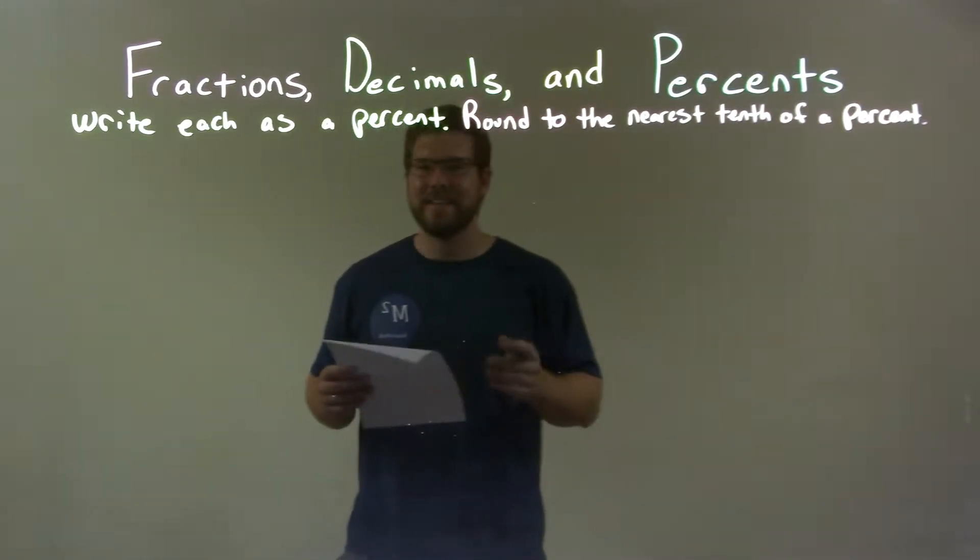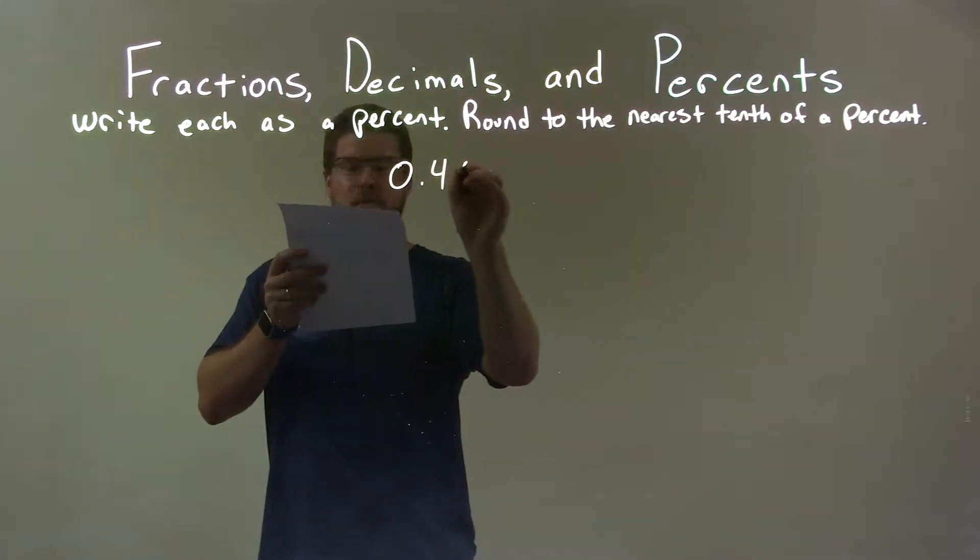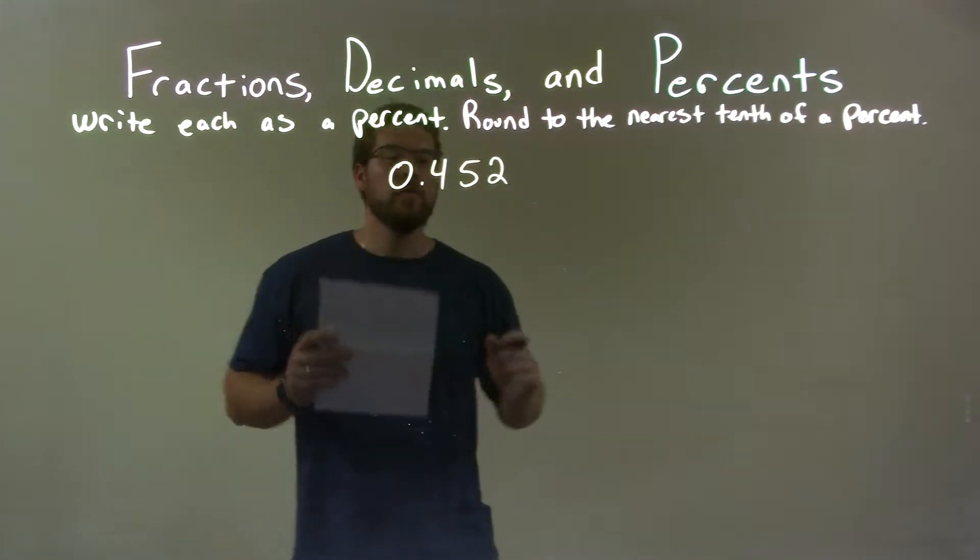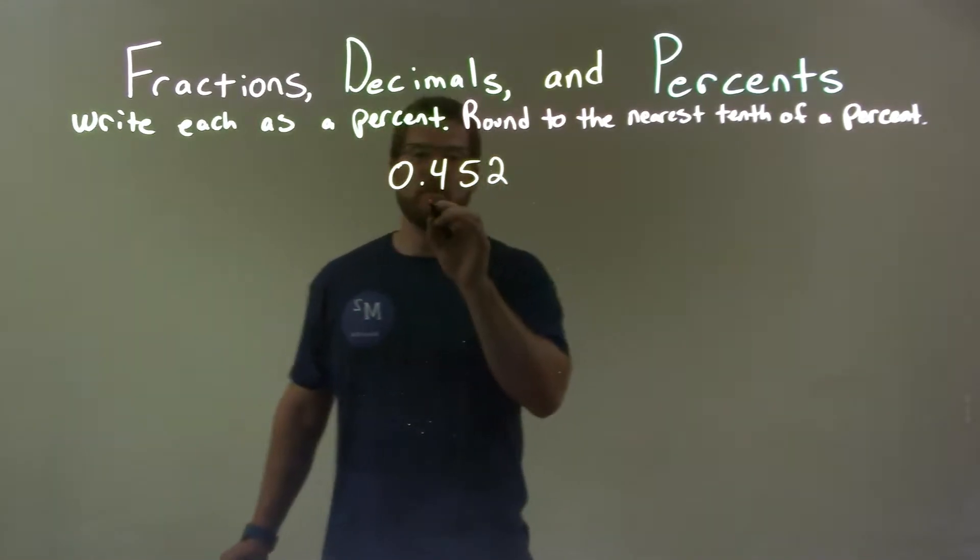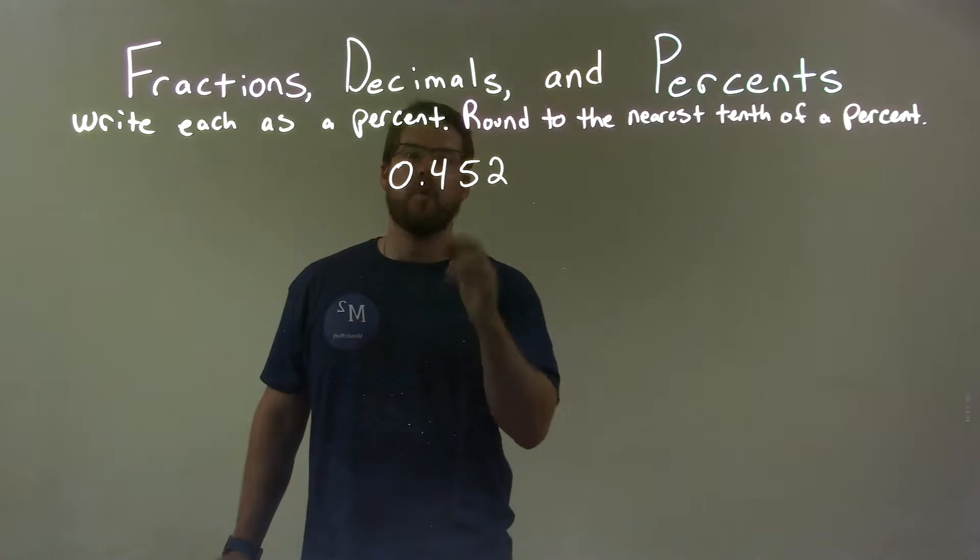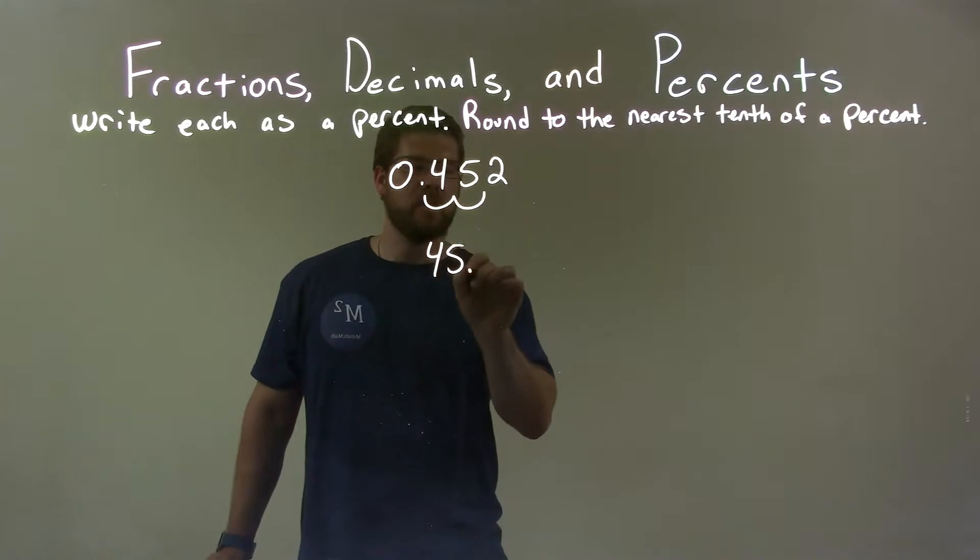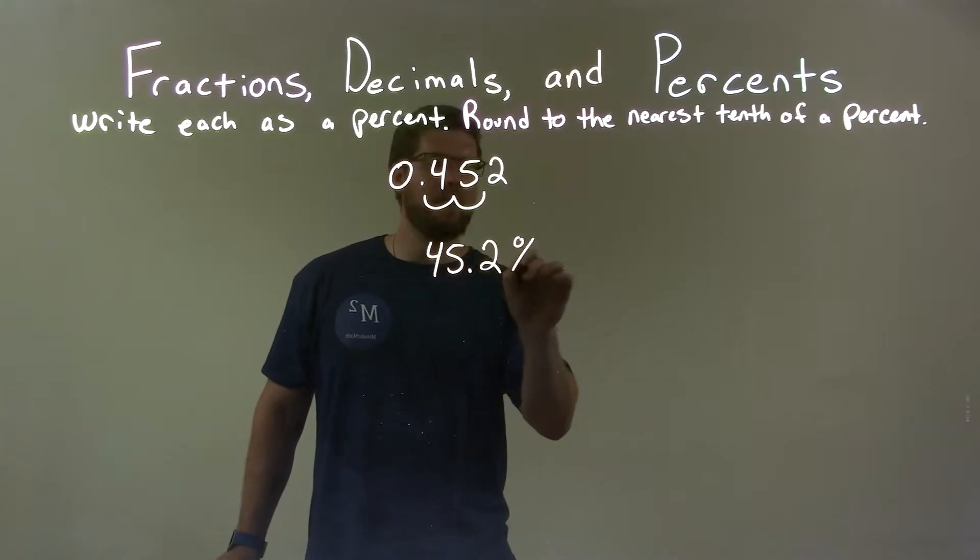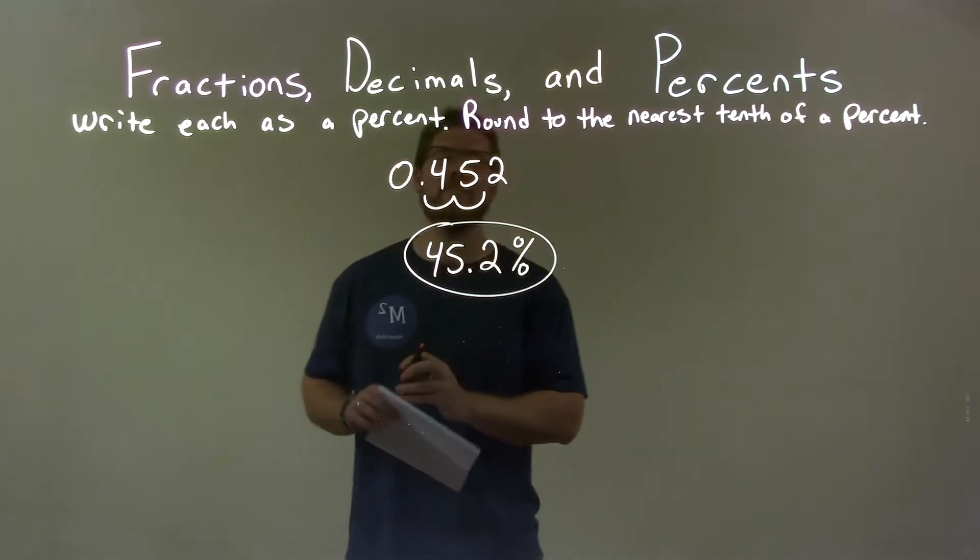So if I was given this decimal 0.452, to convert a decimal to a percent we need to move the decimal place two spots to the right. So we have 1, 2 and there we go. We have two spots. We have 45 decimal place 0.2 and now we have it as a percent. So our final answer is 45.2%